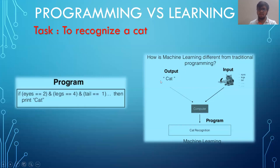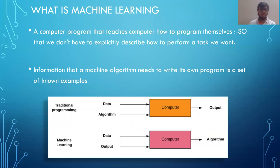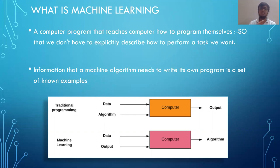You give input and output to a computer program, and it produces a software called a cat recognition system in which it has by default understood how a cat's eye looks, how cat legs look, and how a cat in total looks. A computer program teaches a computer how to program itself — we don't have to explicitly describe how to perform the task. If I want cat recognition, I should not explicitly define eyes, legs, and tails; computers should learn that by default. That is called machine learning.